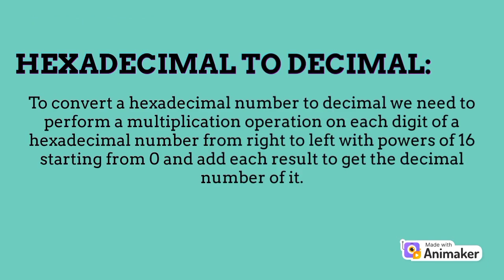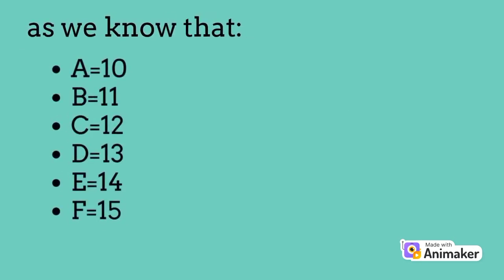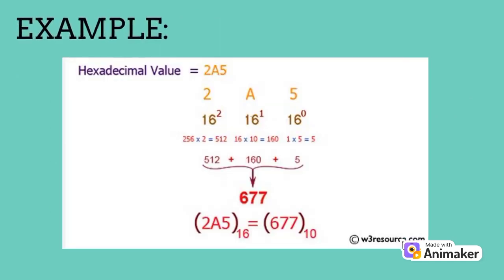Hexadecimal to decimal. To convert a hexadecimal number to decimal, we need to perform a multiplication operation on each digit of a hexadecimal number from right to left with powers of 16 starting from 0, and add each result to get the decimal number. As we know, A equals 10, B equals 11, C equals 12, D equals 13. Here is an example of hexadecimal to decimal conversion.